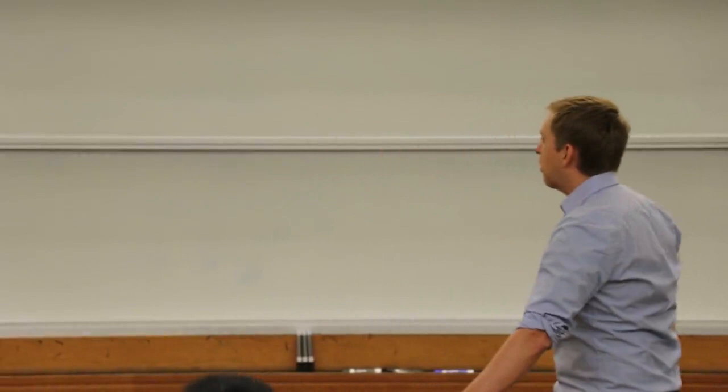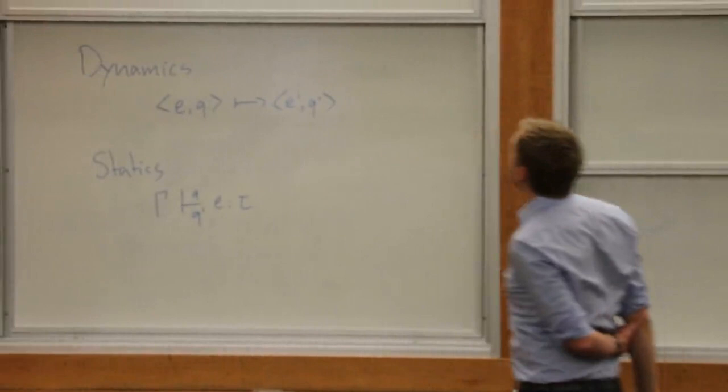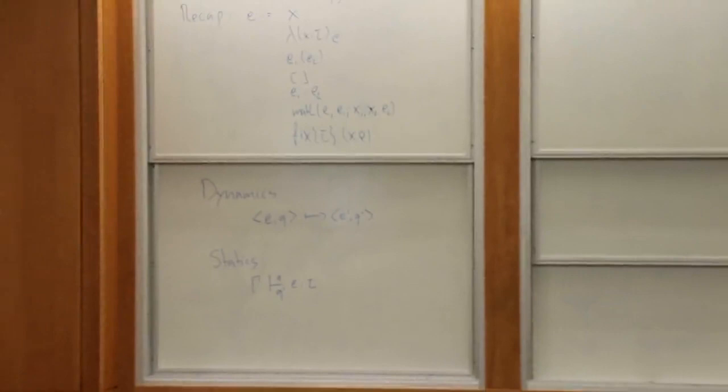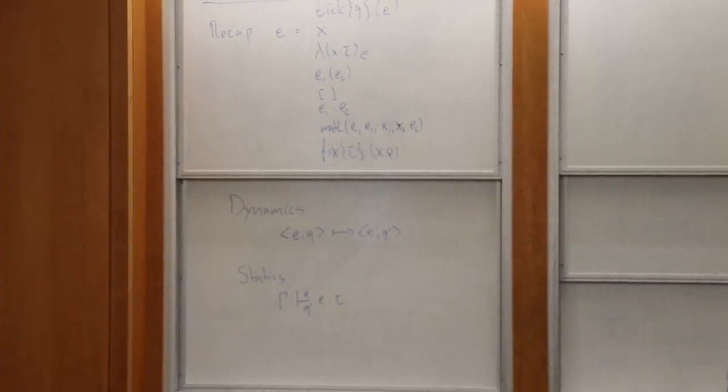We're just picking up where we left off. We defined this language here — it's a simply-typed lambda calculus where we added lists and also fixed points. And with lists comes nil, cons, and the pattern match.